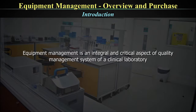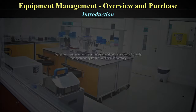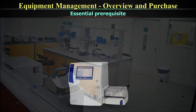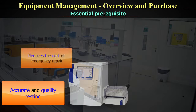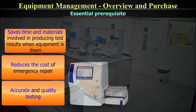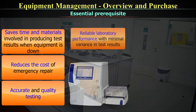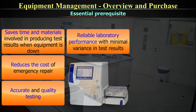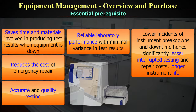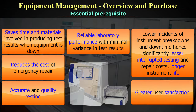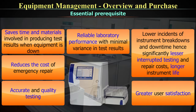Equipment Management is an integral and critical aspect of the quality management system of a clinical laboratory. It's an essential prerequisite for accurate and quality testing. It reduces the cost of emergency repair, saves time and materials involved in producing test results when equipment is down. Reliable laboratory performance with minimal variance in results is assured. It lowers incidence of instrument breakdowns and downtime, resulting in significantly lesser interrupted testing and repair costs, and assures longer instrument life. And above all, it ensures great user satisfaction.